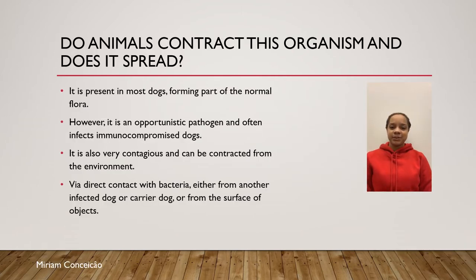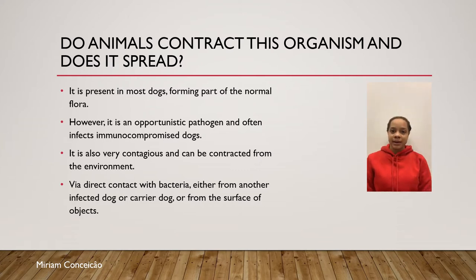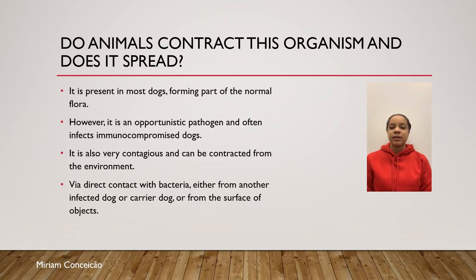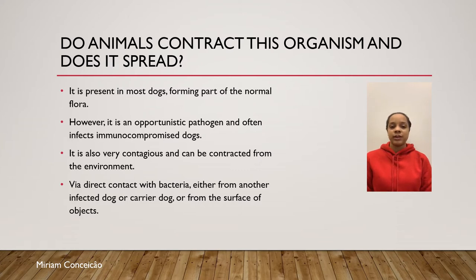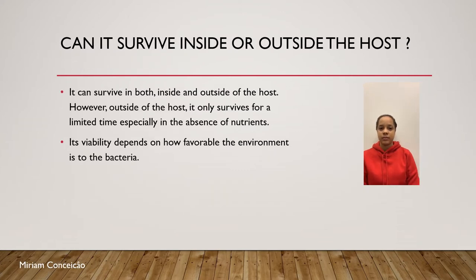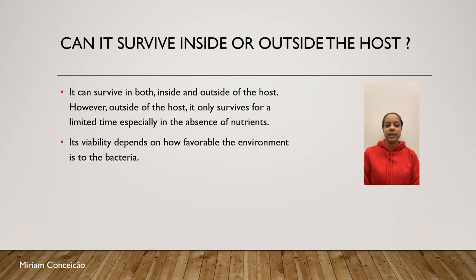Staphylococcus pseudintermedius is present in all dogs, forming part of the normal flora. However, it is an opportunistic pathogen and often causes infection in immunocompromised dogs. It is also very contagious and can be contracted from the environment via direct contact with the bacteria, either from an infected or carrier dog or from the surface of an object. It can survive both inside and outside of the host, but can only survive for a limited time outside, especially in the absence of nutrients. Its viability depends on how favorable the environment is to the bacteria.